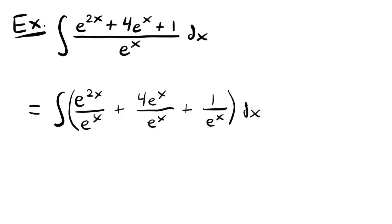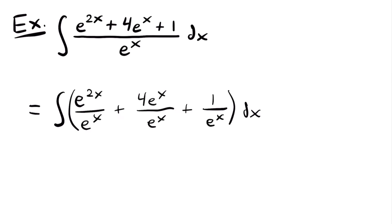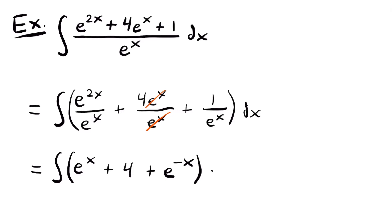We get e to the power of 2x over e to the power of x, plus 4 times e to the power of x over e to the power of x, plus 1 over e to the power of x, all times dx. For the first term, dividing same-base exponentials means subtracting exponents: 2x minus x equals x, so we get e to the power of x. For the second term, e to the power of x cancels, leaving plus 4. For the third term, moving e to the power of x to the numerator gives plus e to the power of negative x.